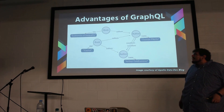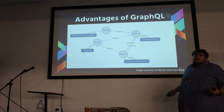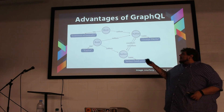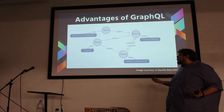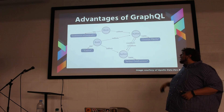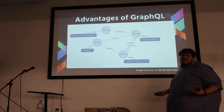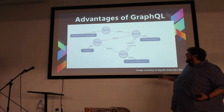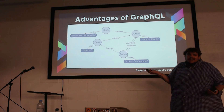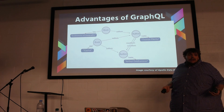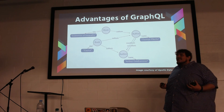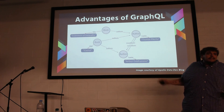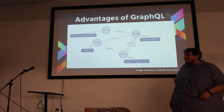If we look at a very simple ERD — maybe a database storing books and authors — you can imagine if I want a book detail page for 'Capital', it has two authors so I have to query the authors table. And maybe I even want a link to related titles. So in just one simple view, I've got three, four, five queries, and you can imagine those can stack up quite a bit on the client side.